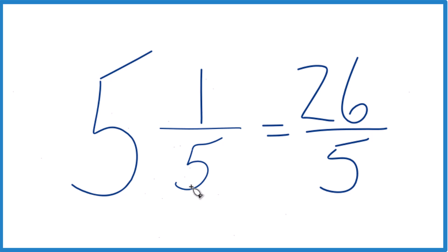5 times 5, 25. 25 plus 1 is 26. That's our numerator. Bring that denominator across there, and you're done.